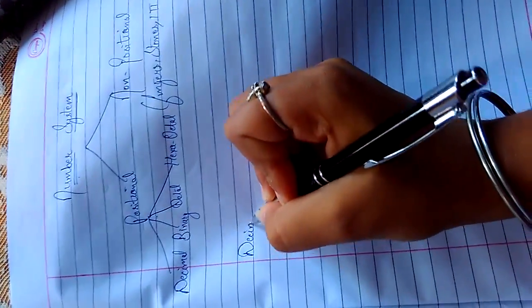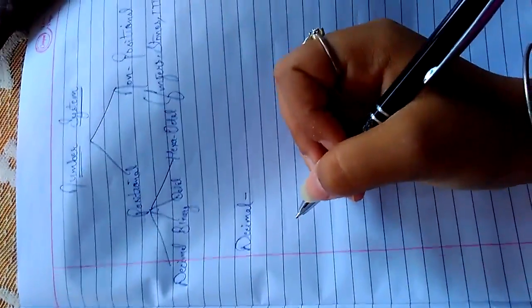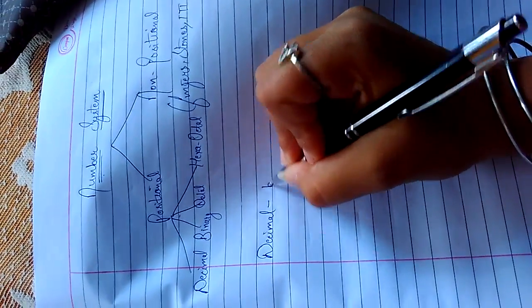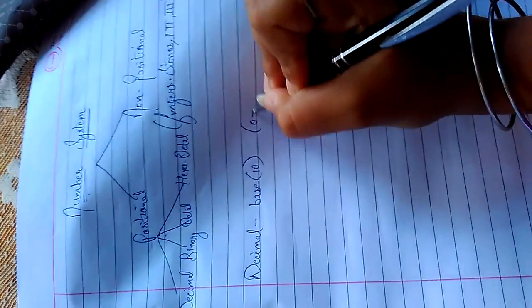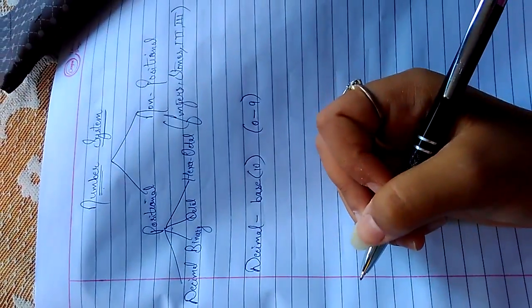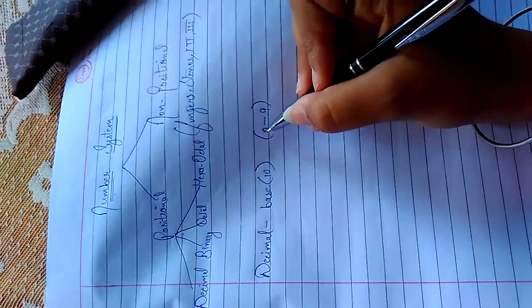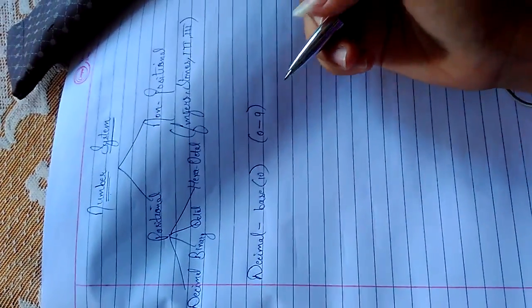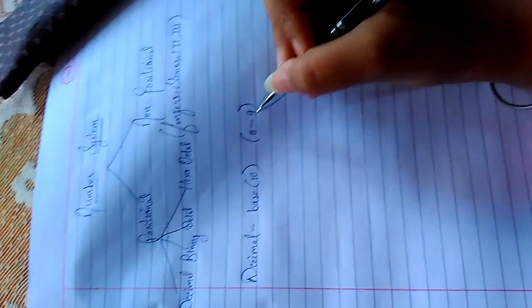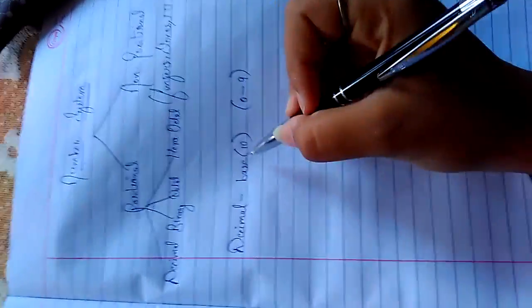Decimal number system has base 10 and counts from 0 to 9. If we count on our fingers, 0 will include the first position and 9 will consist the 10th position. Hence, it has base 10.